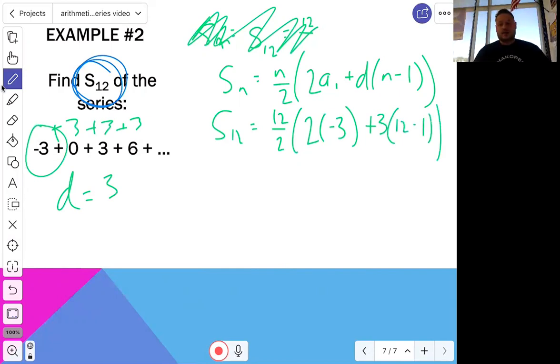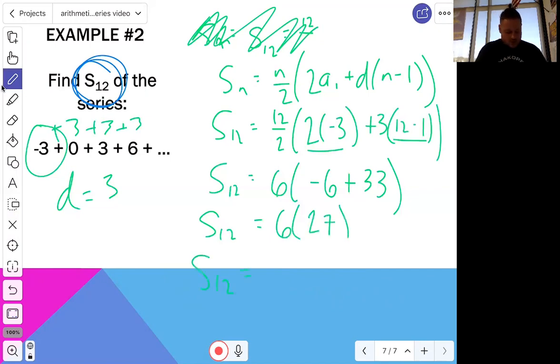At that point, you could plug this whole thing into your calculator. It would be a lot, but we did practice some of that order of operations using your calculator. So if you'd like to go that, go ahead and do that. Go for it. I'm going to do it by hand because again, math is fine. So 12 divided by two is six. Two times negative three is negative six plus 12 minus one is 11. 11 times three is 33. So I got it down to there. So the sum of my first 12 would be six times negative six plus 33 is 27. And so six times 27 would be 162. So what that means is the sum of the first 12 terms of this sequence is equal to 162.